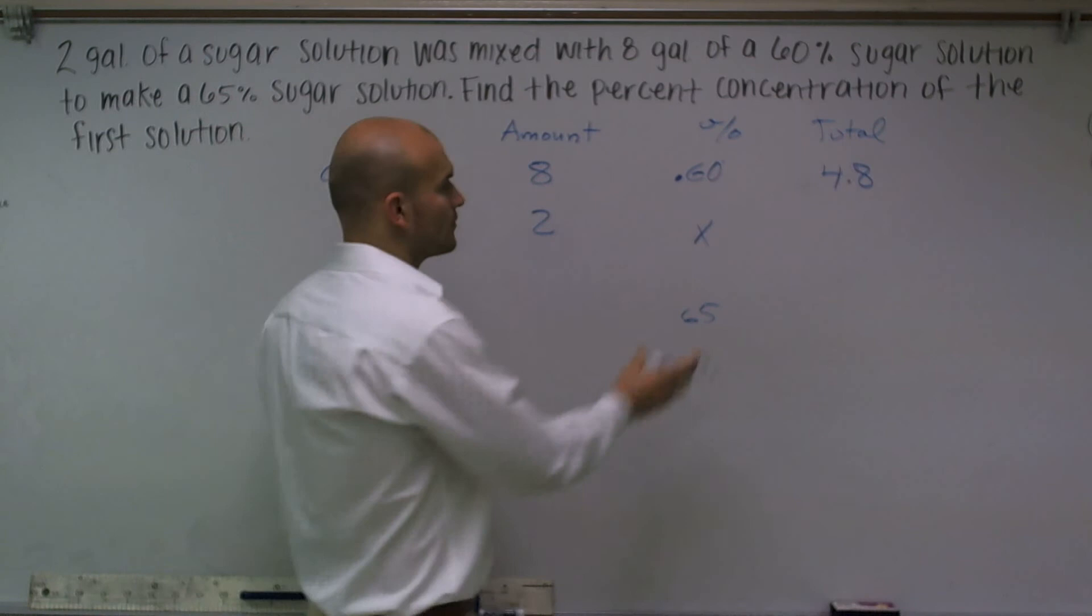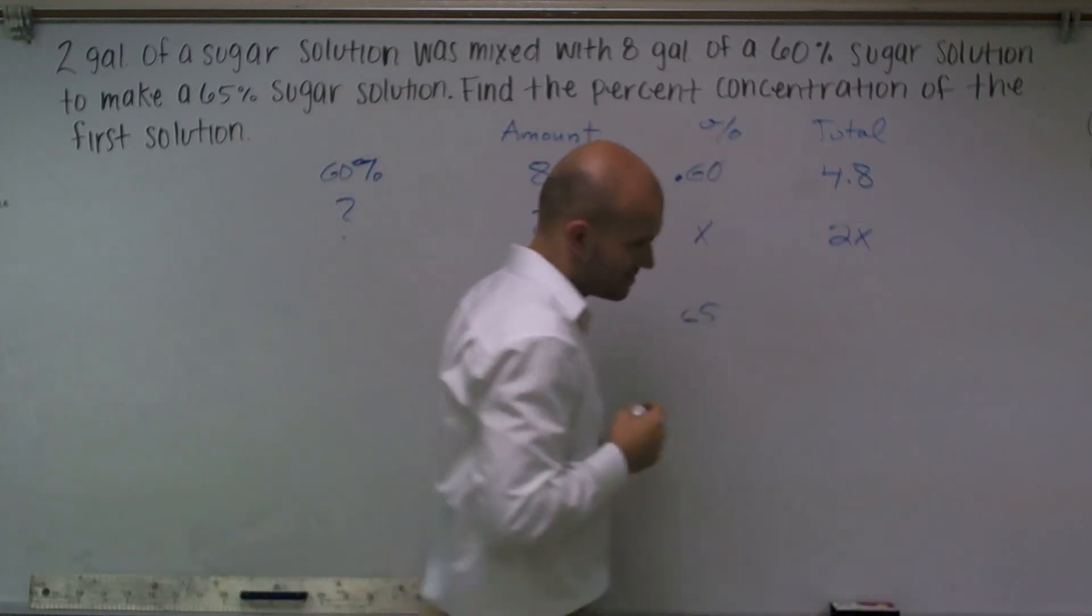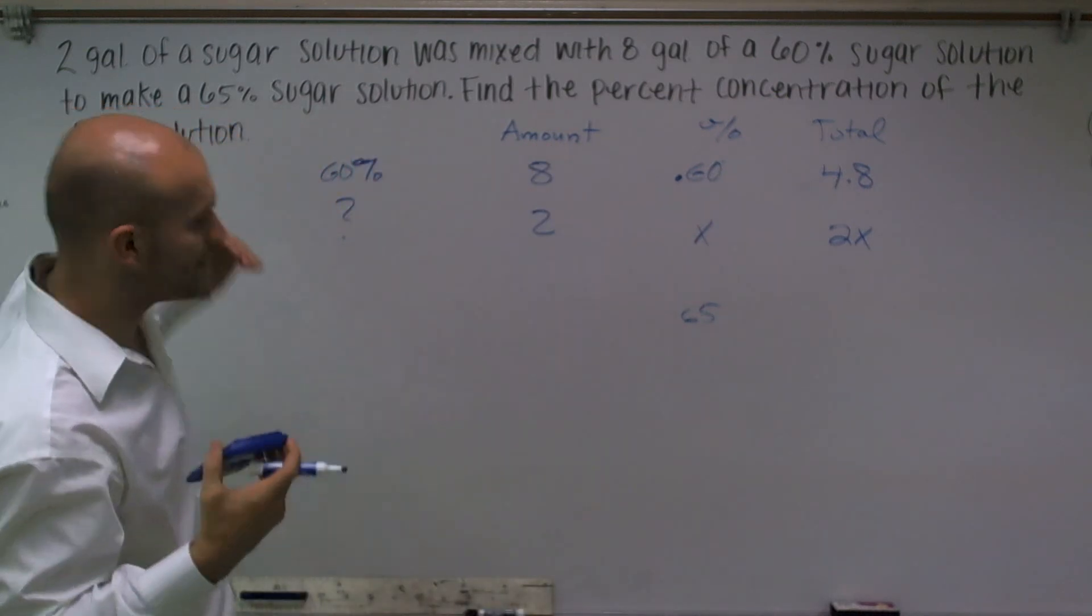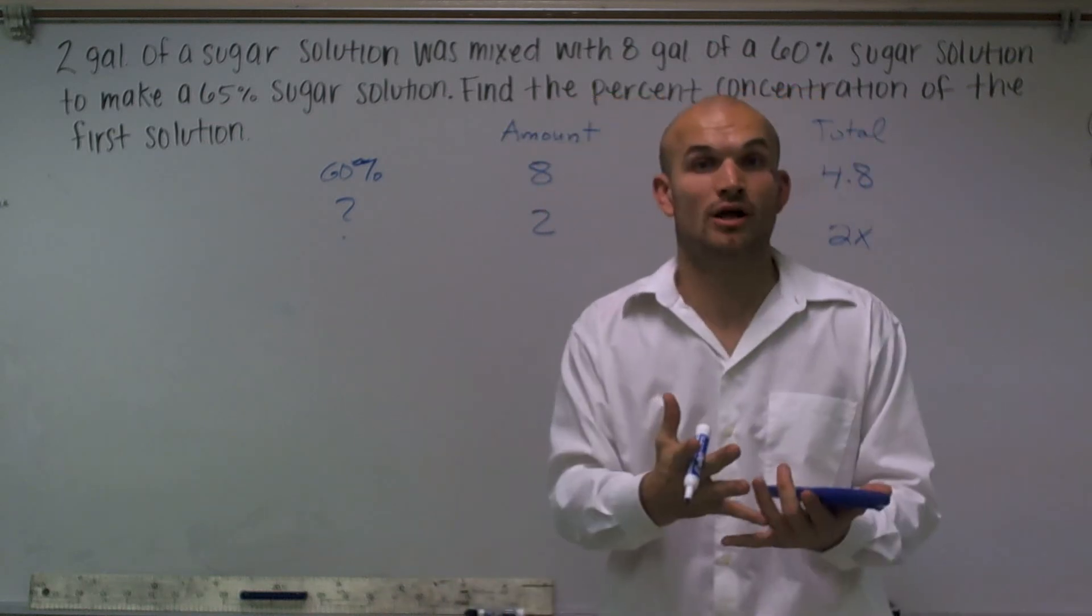And then to find the total, we're going to take whatever that percentage and times it by two. So this will equal 2X. Now, the next thing is, remember, whenever you're looking at a mixture problem, we've got to remember we're combining our elements, right?